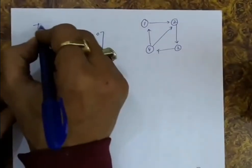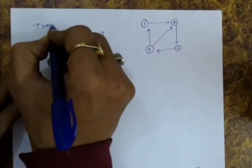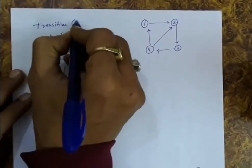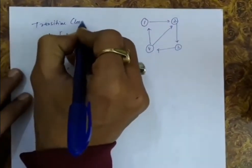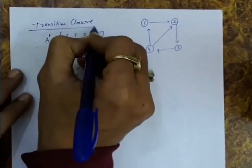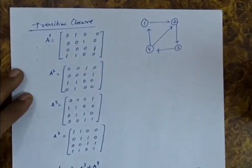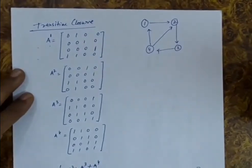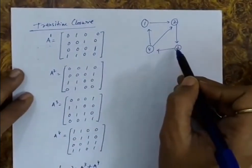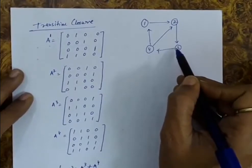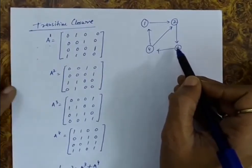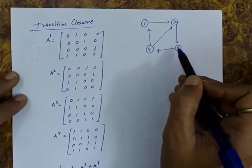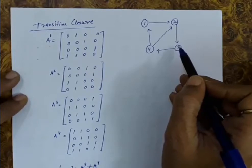We will discuss the transitive closure in this lecture. The transitive closure is a graph of an original graph wherein we show all the paths. If there is a path between a pair of vertices — meaning I can reach from one vertex to another vertex — that will be shown as a direct edge.